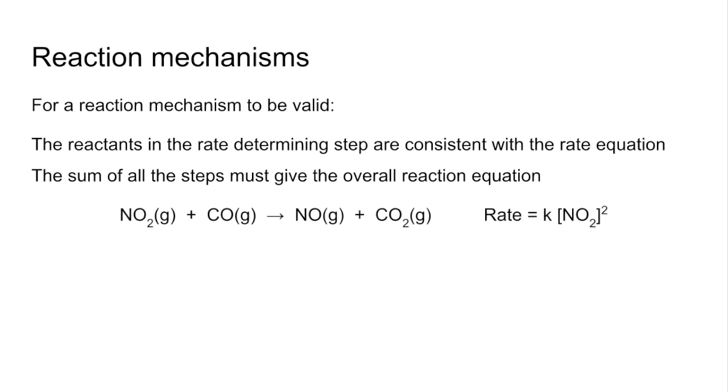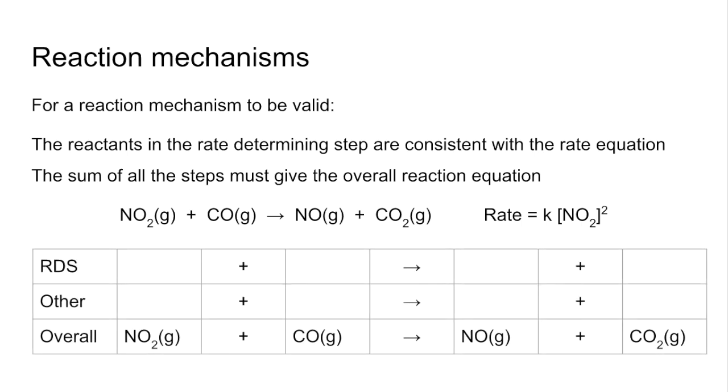We'll look at that example we've already seen. We're going to come up with a two-step mechanism for this reaction. The first thing I'll do is create a table like this one. You can see we've got a row for the rate determinant step and a row for the other step. I've also got the overall equation pre-populated. The first thing I'm going to do is put in the reactants from the rate determinant step, just to make sure that we're satisfying the first requirement.